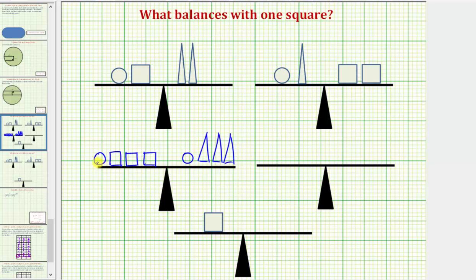Notice how when we do this, we have one circle on each side of the scale, and because the two circles have the same weight, if we remove these, we now know that three squares would balance with three triangles.